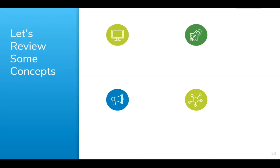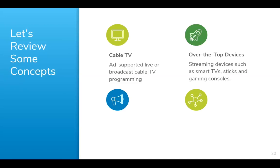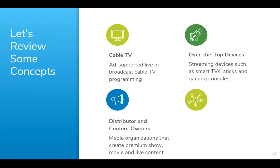Before handing things off, let's formally define a few more terms. Cable TV — also called linear TV — refers to ad-supported live or broadcast cable TV programming. Over-the-top devices: consumers use smart TVs, gaming consoles, and sticks such as fire sticks to stream. Distributor and content owners: CTV is ultimately powered by organizations that create content people watch. CTV doesn't include user-generated content you may find on YouTube, but instead features full-length video content you might also find on linear TV. And networks: just like cable TV advertising, connected TV places ads on various networks via apps. With that, I'm going to pass it over to Andrew, who's going to dive into how Midco's connected TV ad solution works and how connected TV reporting works.